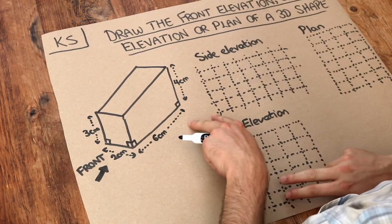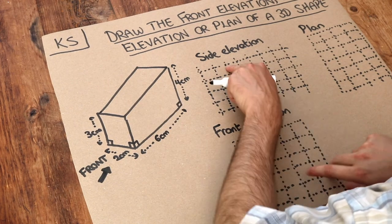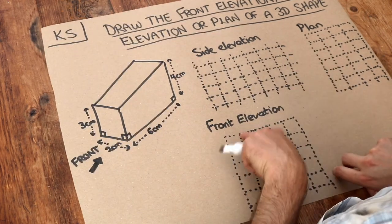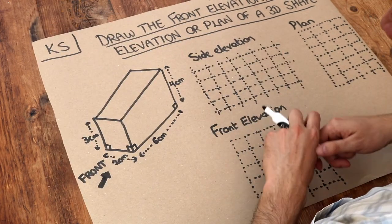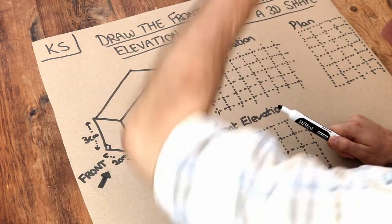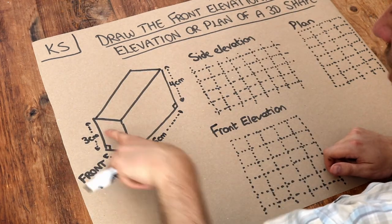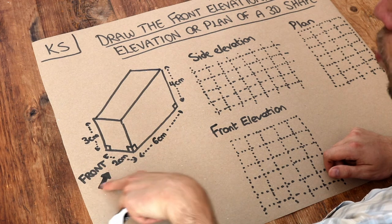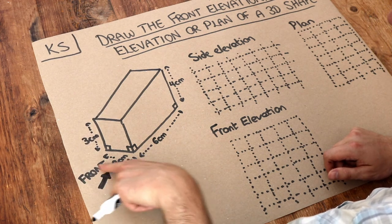So we've got a 3D solid here and we need to draw the side elevation of it, the plan of it and the front elevation. Now the elevation of something is what you see vertically going up. So it might be the front elevation from the designated front of the shape and it will always tell you in the question what's the front of the shape.